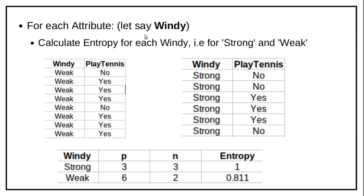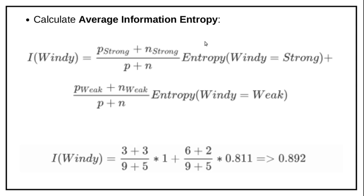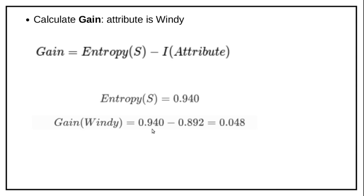The last attribute is windy, which has two values: strong and weak. We form tables with respect to strong and weak, count the positive and negative examples, and calculate entropy. Then calculate average information entropy: (p_strong + n_strong)/(p+n) * entropy(strong) + (p_weak + n_weak)/(p+n) * entropy(weak), where p and n are from the original dataset. Substituting values gives average information of 0.892, and gain of windy = 0.940 minus 0.892 = 0.048.